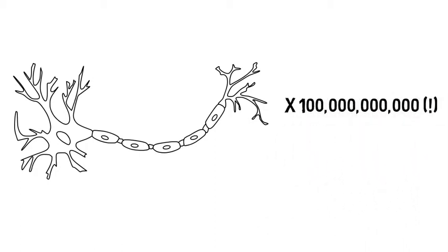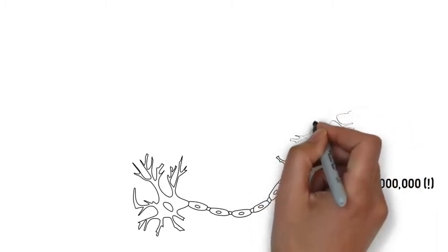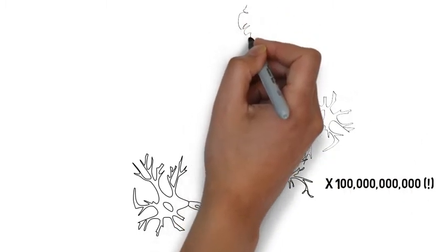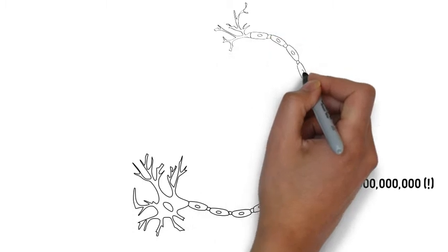Moreover, there may be up to one quadrillion synapses, that is, connections between neurons through which they transfer information. That's up to 10,000 synapses for every one of those 100 billion individual neurons.